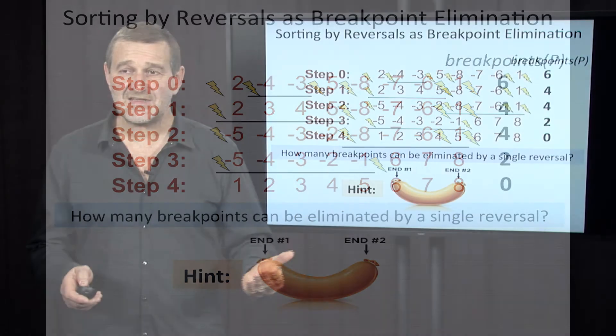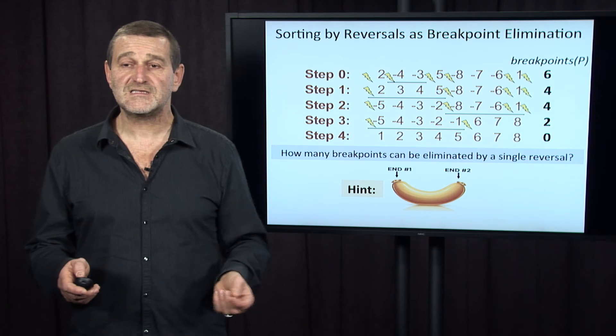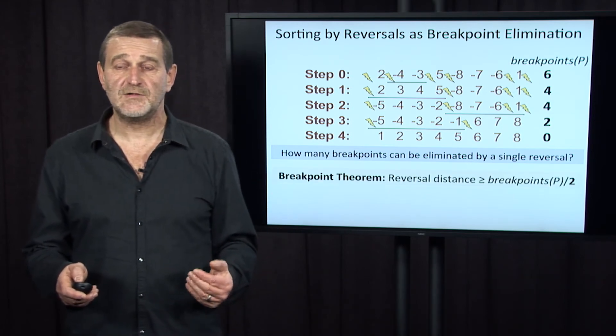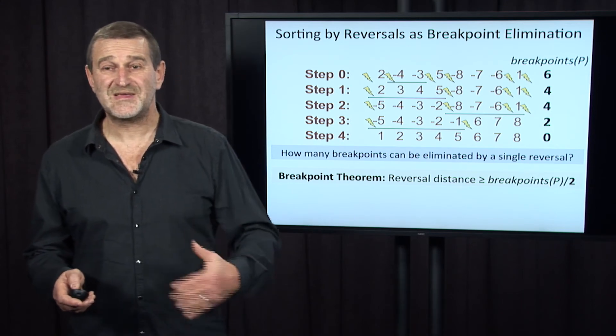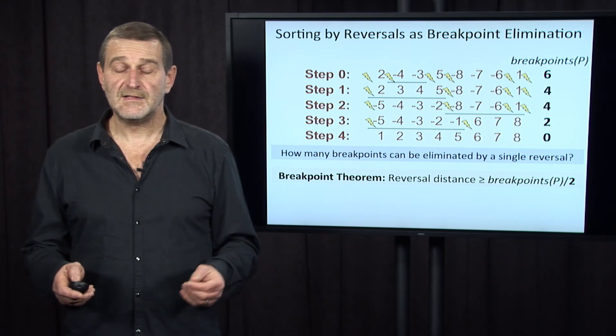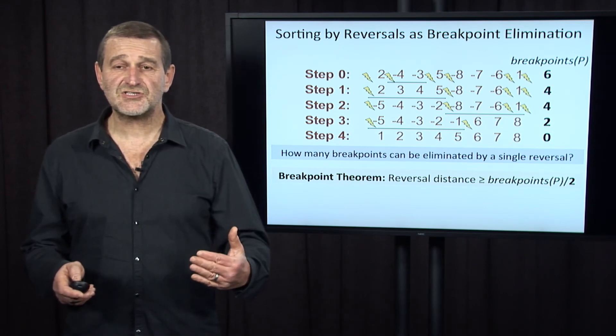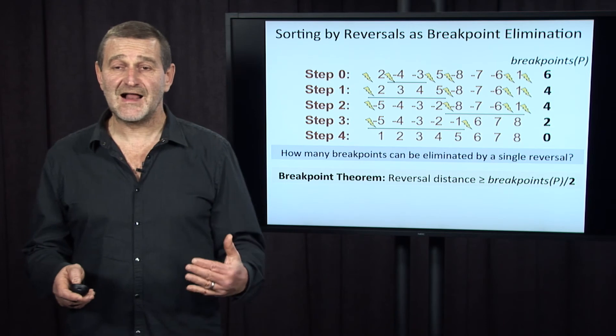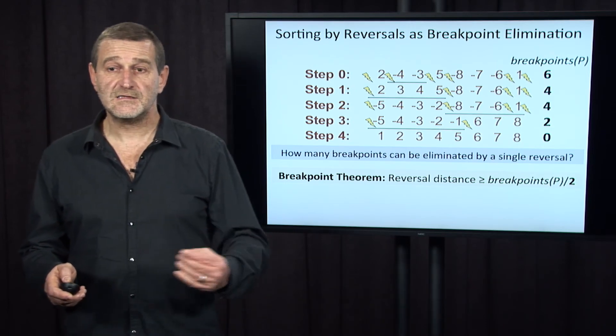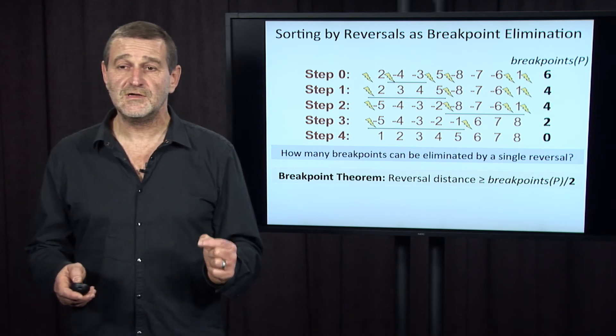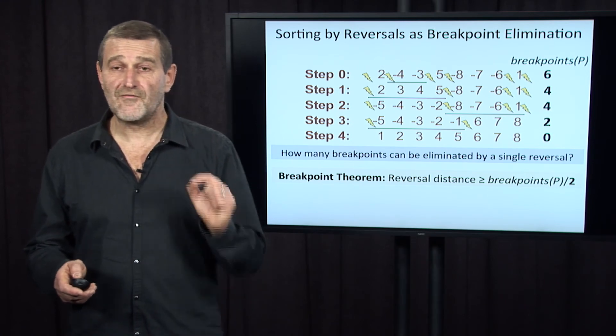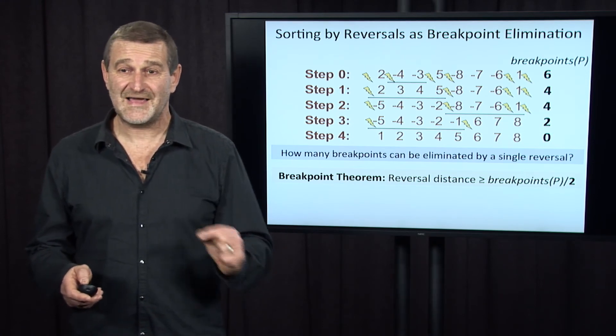And since at every step, the number of breakpoints can be reduced by at most two, we have the breakpoint theorem. Reversal distance should be greater than or equal to the number of breakpoints over two. And it also immediately suggests a new greedy algorithm, and probably better greedy algorithm, for sorting by reversal. Indeed, the only thing we need to do to sort permutation optimally is to reduce the number of breakpoints by two at every step.